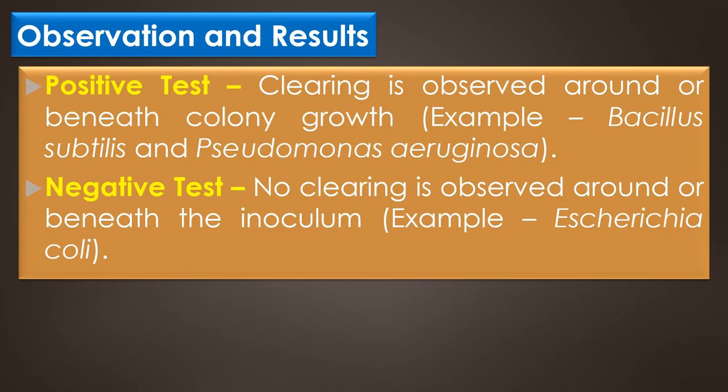Observation and results of the casein hydrolysis test: In a positive test, clearing is observed around or beneath colony growth. In a negative test, no clearing is observed around or beneath the inoculum. Some casein hydrolysis positive bacteria are Bacillus subtilis and Pseudomonas aeruginosa, while E. coli shows a negative reaction for the casein hydrolysis test.